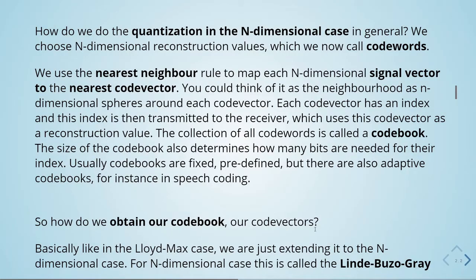How do we do the quantization in the n-dimensional case in general? We choose n-dimensional reconstruction values, which we now call code words. We use the nearest neighbor rule to map each n-dimensional signal vector to the nearest code vector. You could think of the neighborhood as n-dimensional spheres around each code vector. Each code vector has an index, which is transmitted to the receiver, which uses the code vector as a reconstruction value. The collection of all code words is called a codebook, and the size of the codebook also determines how many bits are needed for the index.